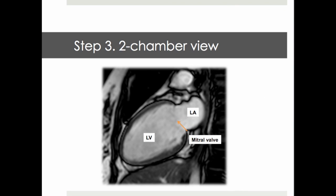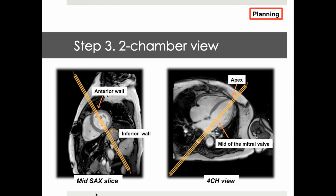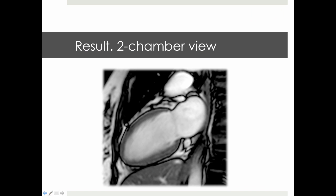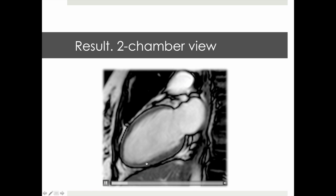Our next planning step is the 2-chamber view, defined by visualization of the left ventricle, left atrium, and mitral valve in the middle. For planning, we again use the mid short axis slice as well as the 4-chamber view just acquired. The planning landmarks include the apex to mid of the mitral valve defining the long axis, as well as the inferior and anterior wall. The resulting 2-chamber view is important for appreciation of regional wall motion abnormalities in the anterior wall as well as the inferior wall.